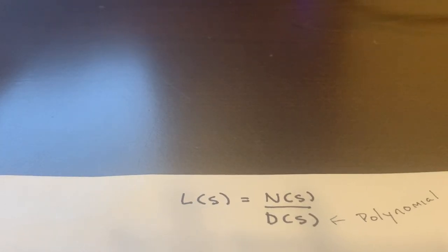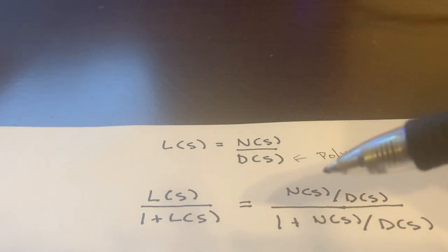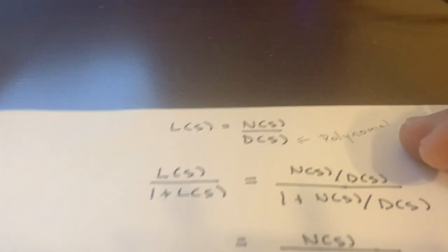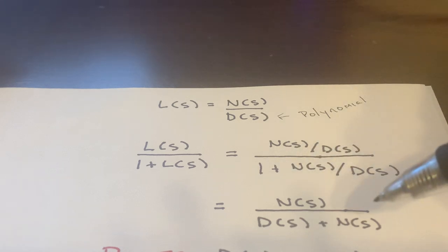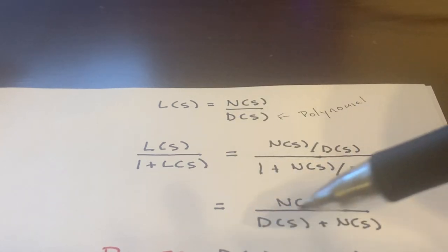And so if I take L of S over one plus L of S, that's just N over D all over one plus N over D. And then I can simplify this down. So I multiply top and bottom by D and I get this is equal to N over D plus N.